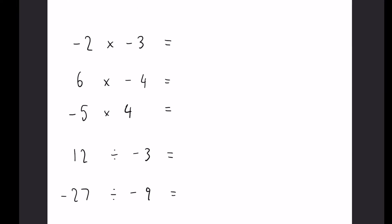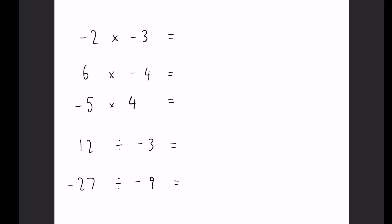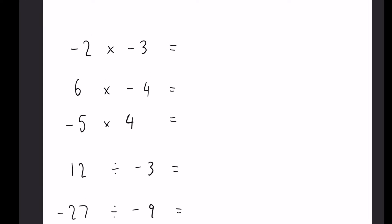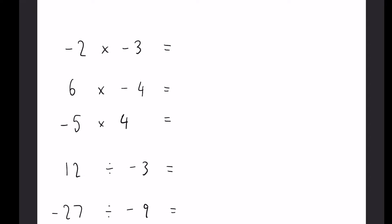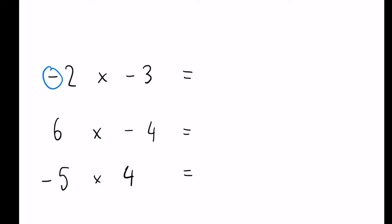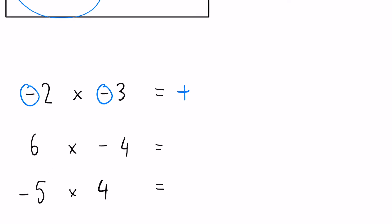Now let's look at some examples with multiplication and division. So minus two times minus three. Now here we have two negatives so we know the outcome is going to be positive looking at our rules again up here. And once we've discovered what the sign is going to be, then we just simply multiply the numbers together. So two times three, our answer is going to be positive six.